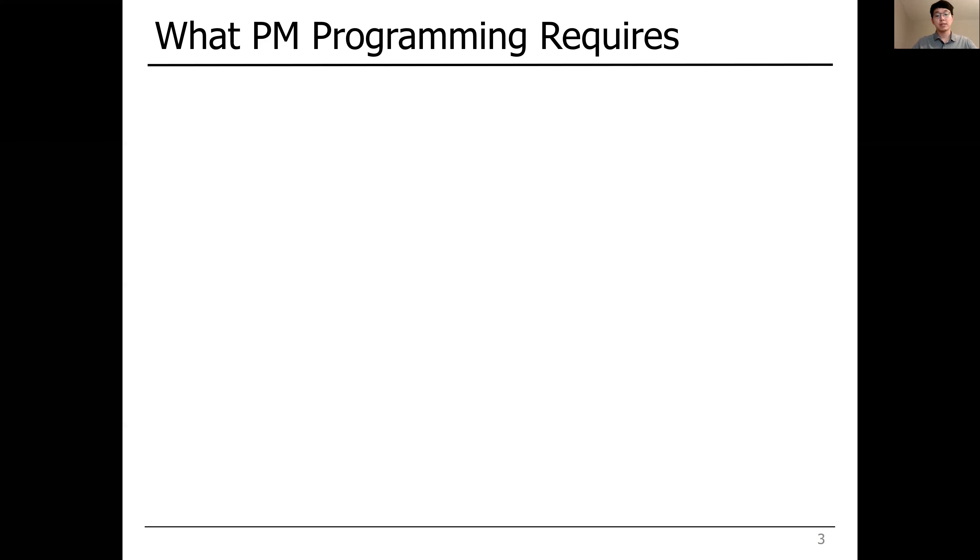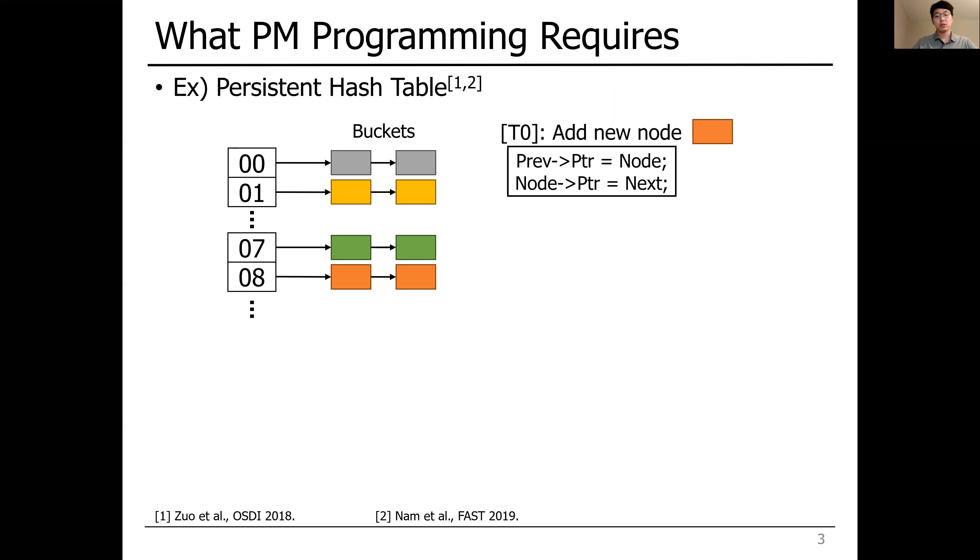Let me explain what persistent memory programming is and what it requires. Let's take an example of a persistent hash table, which is widely used in database systems and key-value stores. If there is one thread attempting to add a new node to the hash table, then the insertion should be done in atomic and durable ways.